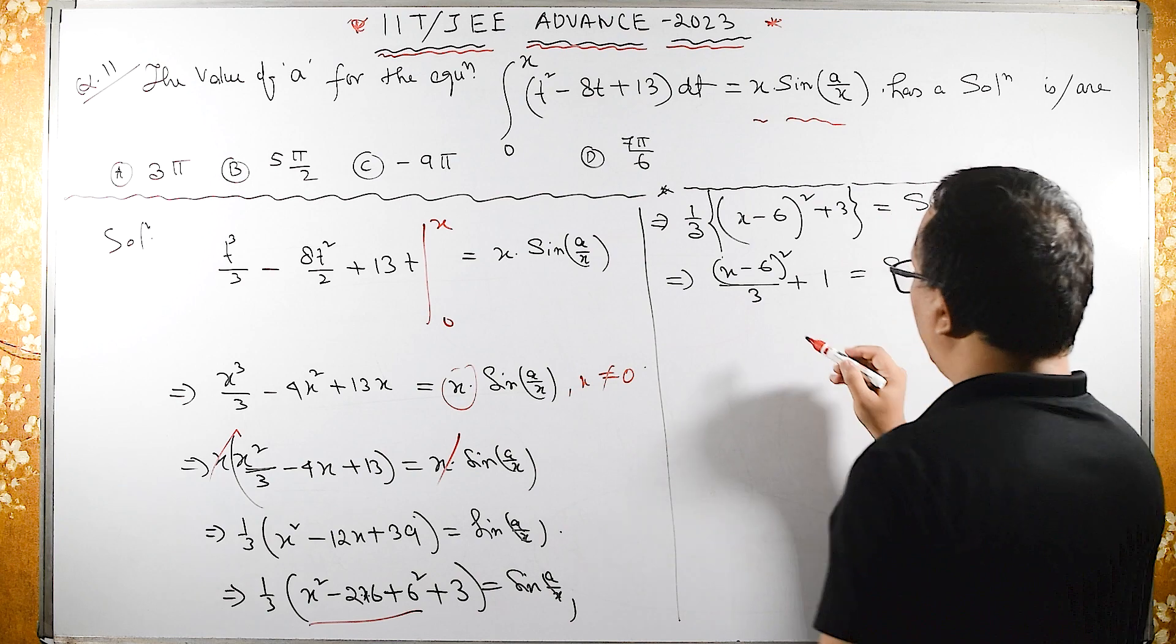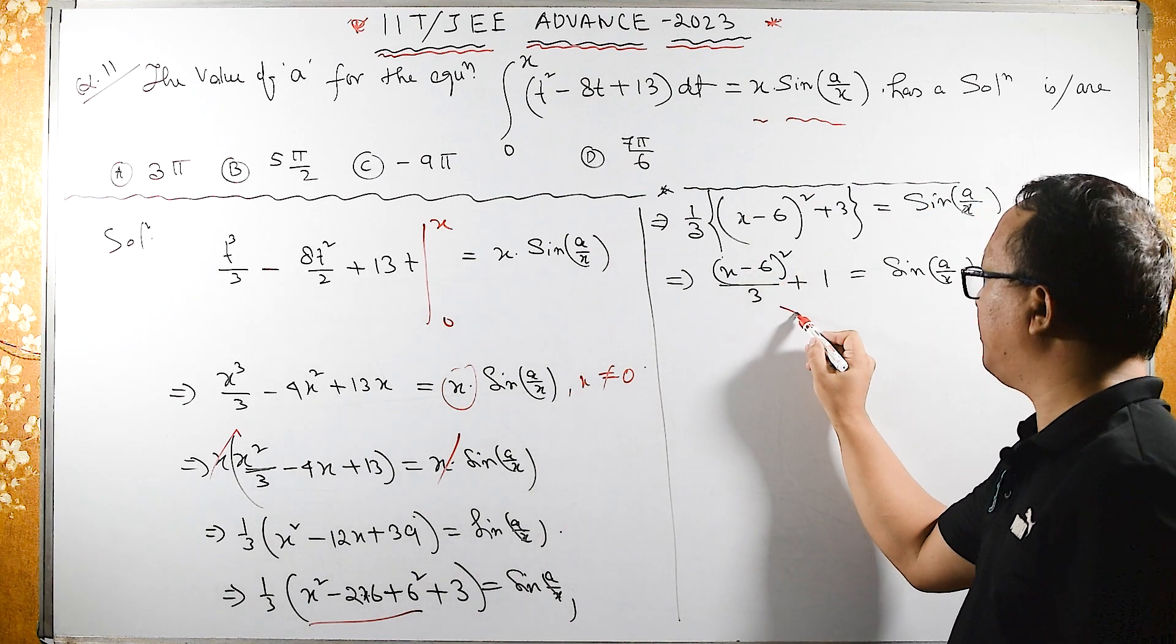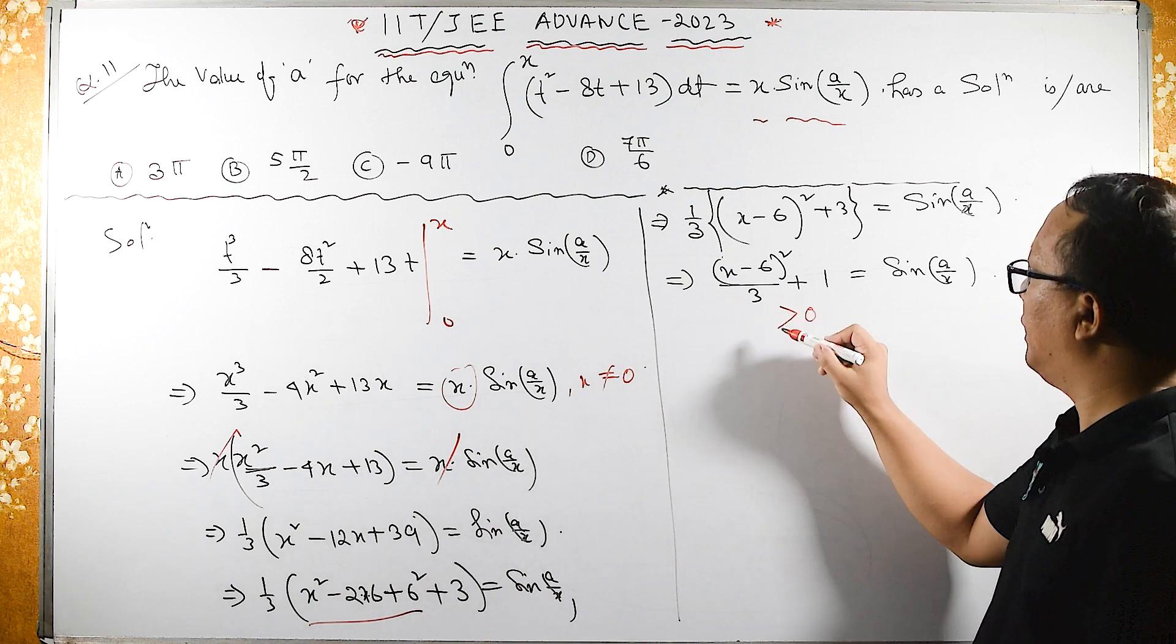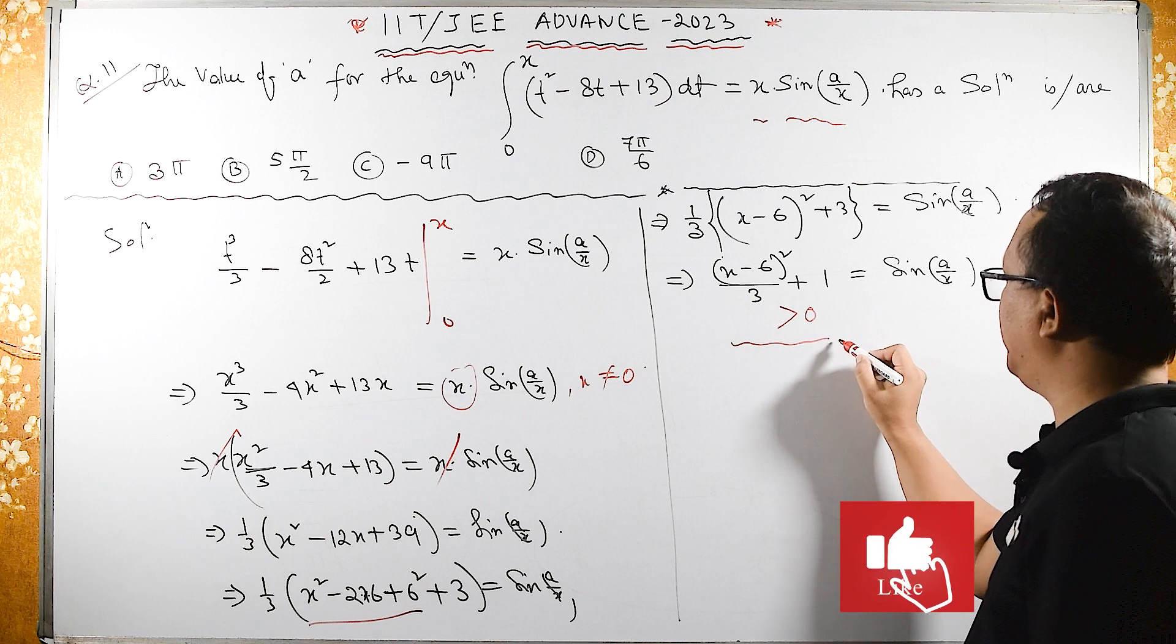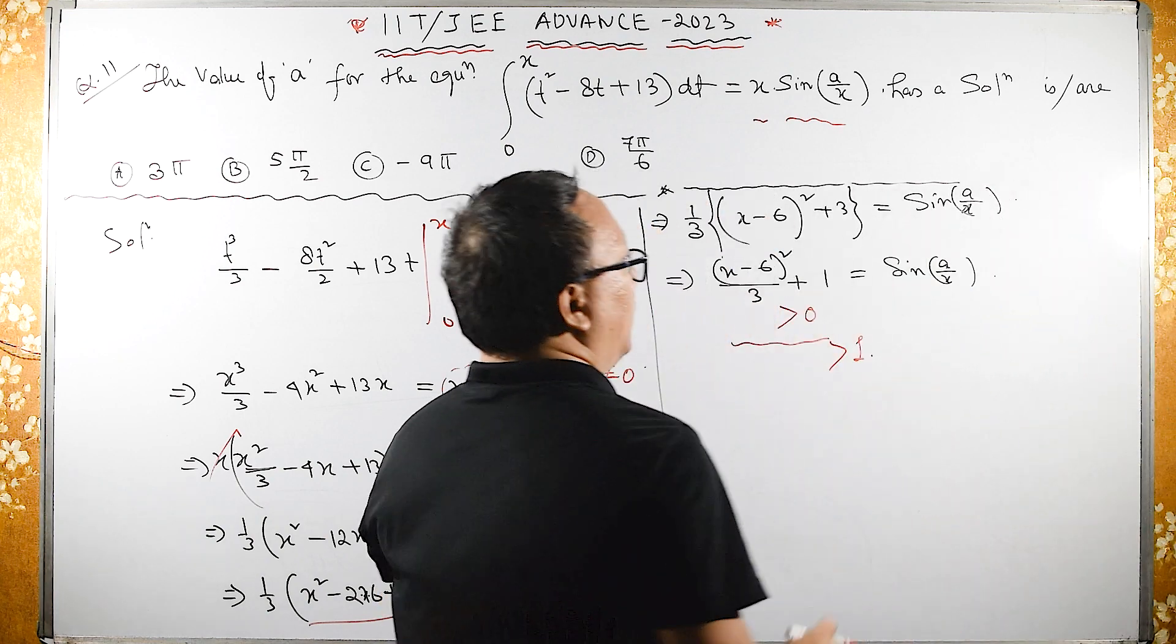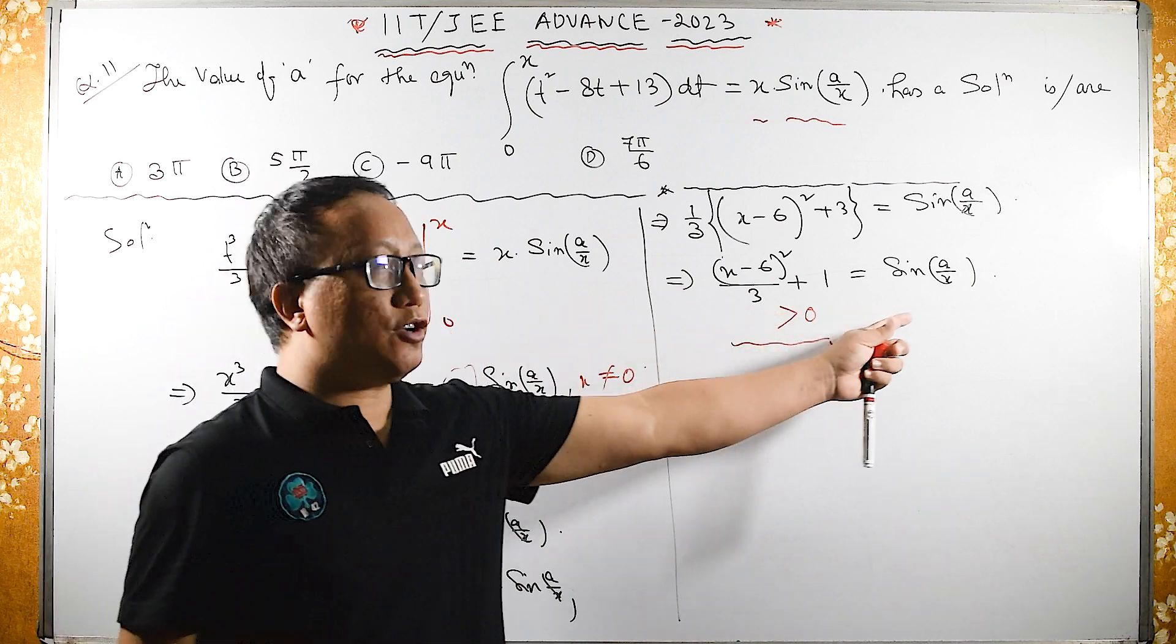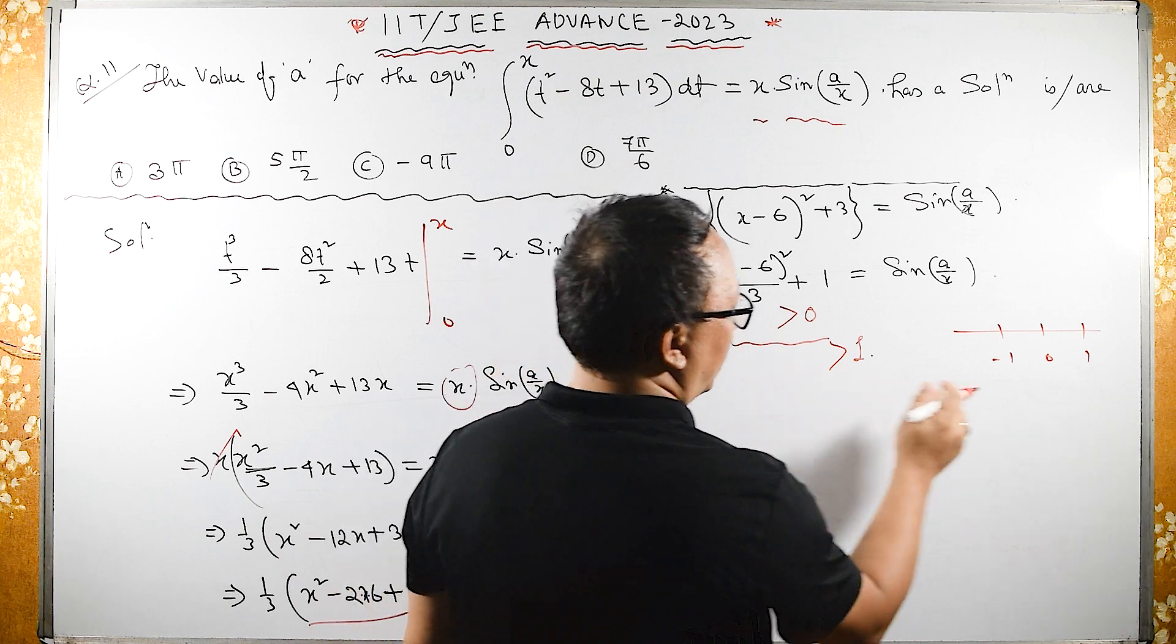Now look here. Since (X - 6)² is here, this term should be greater than 0. Now again we have +1. Therefore this whole term should be greater than 1. We know that the range of sin is -1 to 1, and here this is greater than 1.